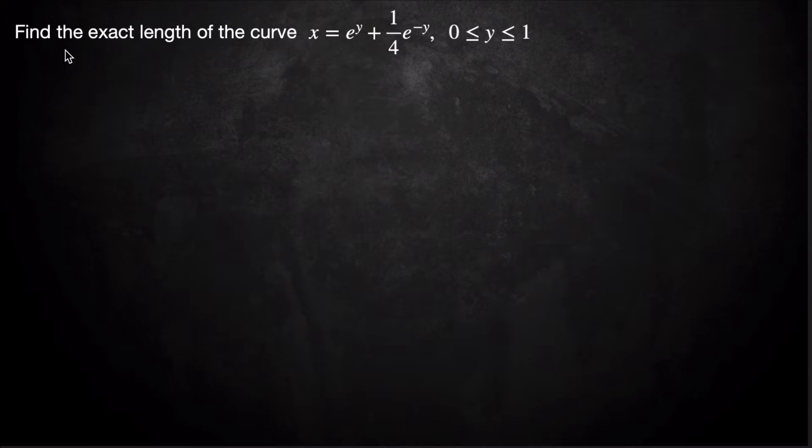Hey guys, what's up? Today we're looking at finding the exact length or arc length of a curve, and this curve is x = e^y + (1/4)e^(-y), 0 ≤ y ≤ 1.